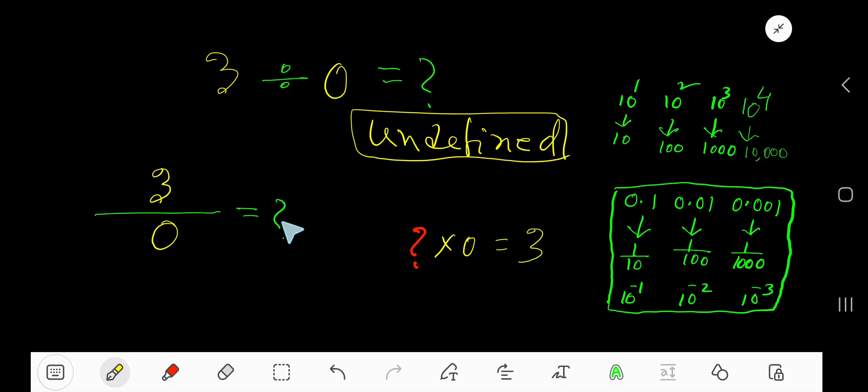what we get is the quotient or answer. This is the division statement. For every division statement, there is a related multiplication statement. So when writing the related multiplication statement, we write divisor times quotient equals dividend. Now think, what